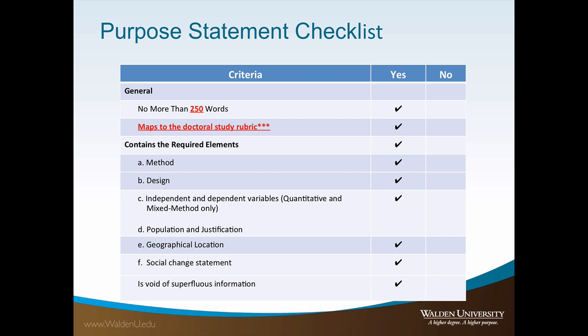The following checklist can be used to aid you in meeting the rubric requirements. This checklist maps directly to the rubric. The required elements are the method, the design, variables if it's a quantitative or mixed method study, the population, the geographical location, and the social change statement. It should be no more than 250 words.